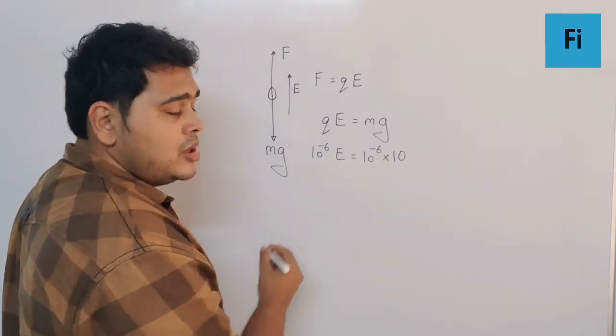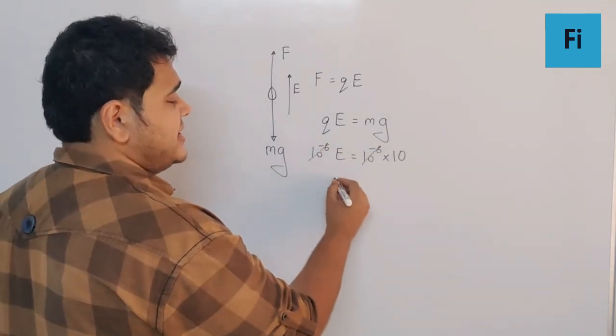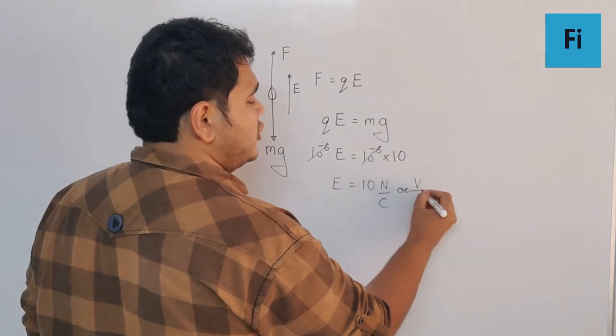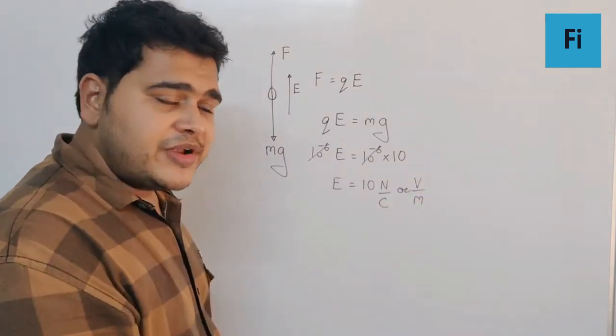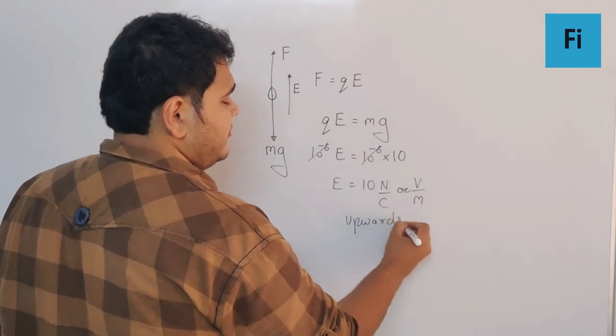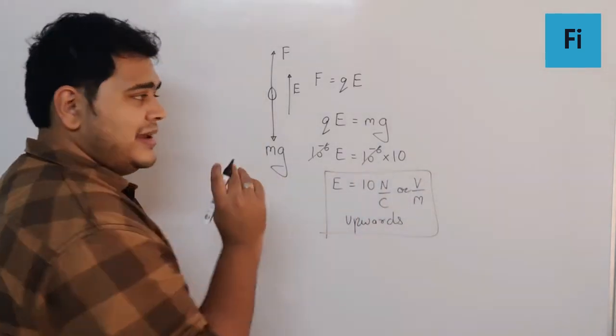So I can cancel this and I get E is equal to 10 Newton per Coulomb, or Volt per meter. Both are the units of it, so that value, but the direction will be upwards, and that will be your final answer.